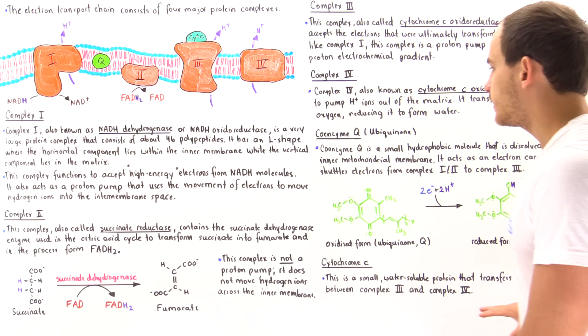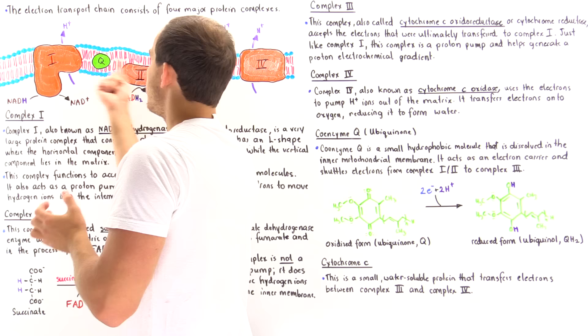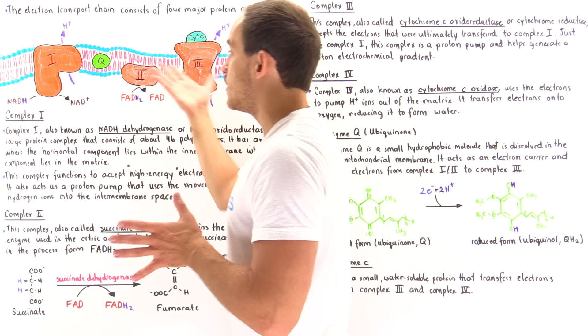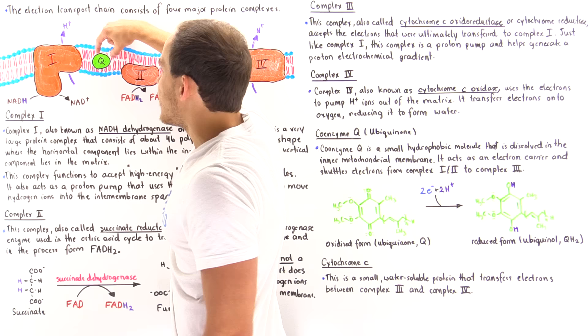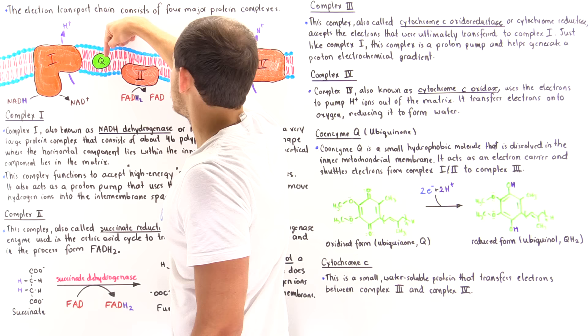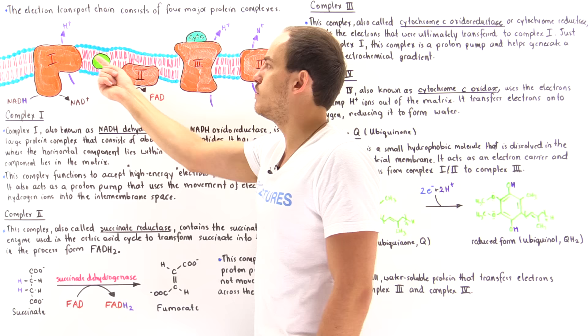Let's look at coenzyme Q, also known as ubiquinone. This is a small molecule dissolved in the membrane of the mitochondria. Because it contains a relatively large hydrophobic region, it can dissolve easily in the membrane and move across it. It takes those electrons from protein complex 1 that were received from NADH and shuttles them onto protein complex 3. Coenzyme Q can also pick up electrons from protein complex 2 and move those electrons onto protein complex 3 as well.